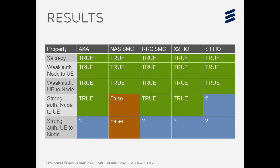This table shows all the security procedures we analyzed and the properties checked: secrecy, weak authentication, and the injective variant we refer to as strong authentication. Secrecy and weak authentication were proved as expected. Strong authentication was more challenging — the tool didn't terminate in many cases, and we had a falsification for one particular procedure, which I'll discuss in the next slide.